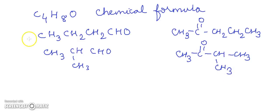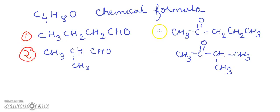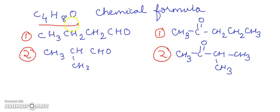For the aldehydes we have two isomers, for the ketones we have two isomers, and overall we have four isomers for the structural formula C4H8O. These are the chain isomers, where we have a difference in the chain of the carbon atoms.